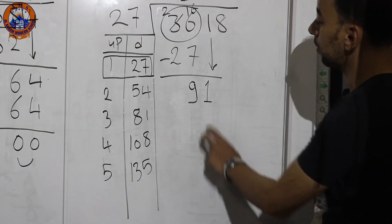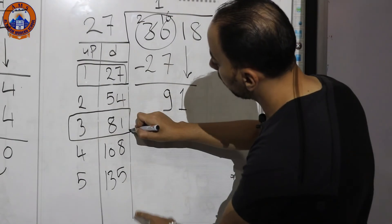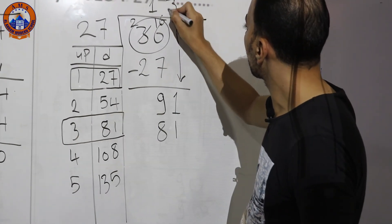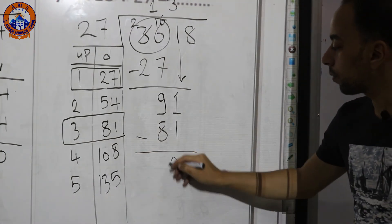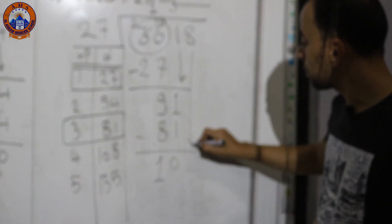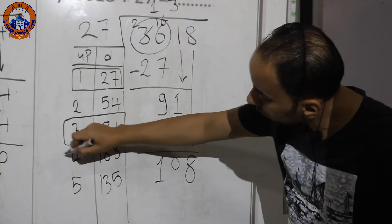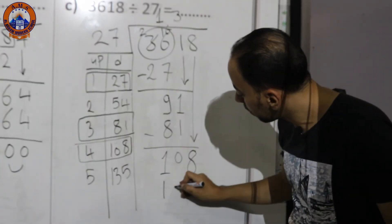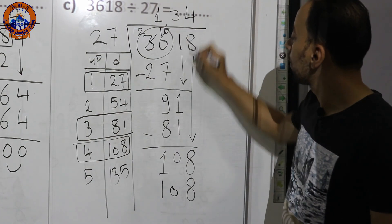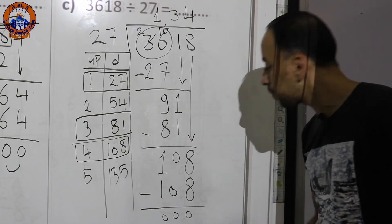Bring down the next digit 1, giving 91. Search for 91 — not found, but the nearest is 81. Put 81 down and 3 up. Subtract: 1−1=0, 9−8=1. Bring down the next digit 8, giving 108. Here it is in the table — put 108 down and 4 up. Subtract: 108−108=0. The problem is solved, and the answer is 134.